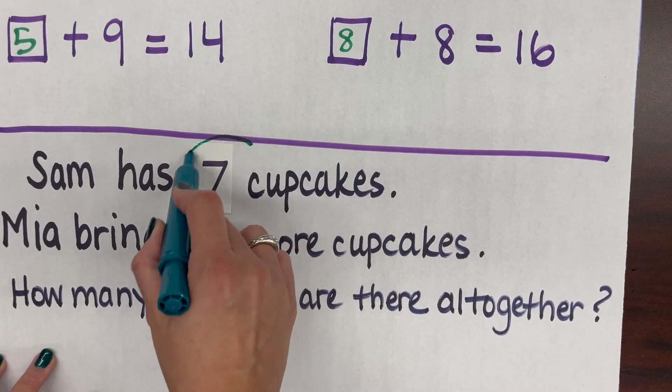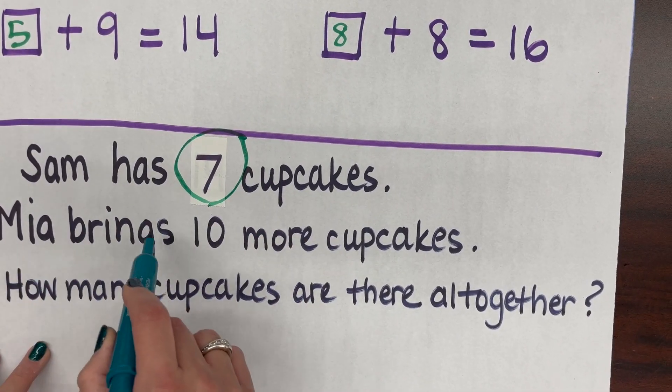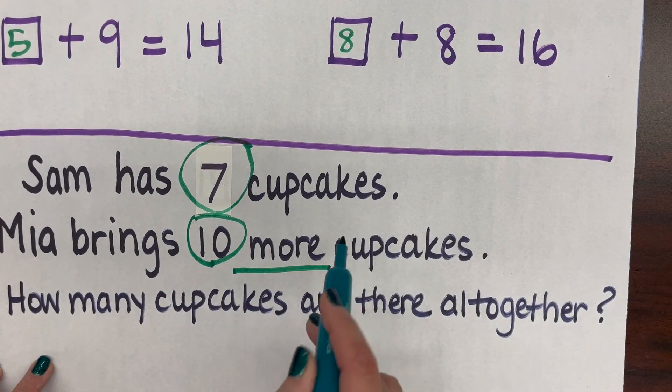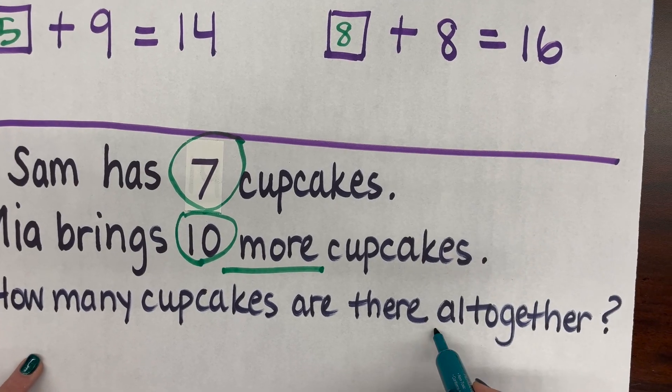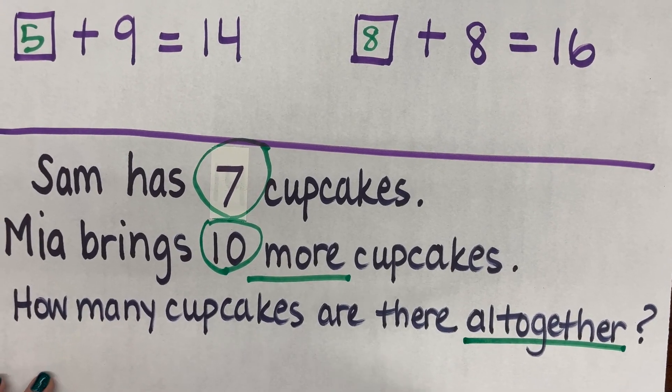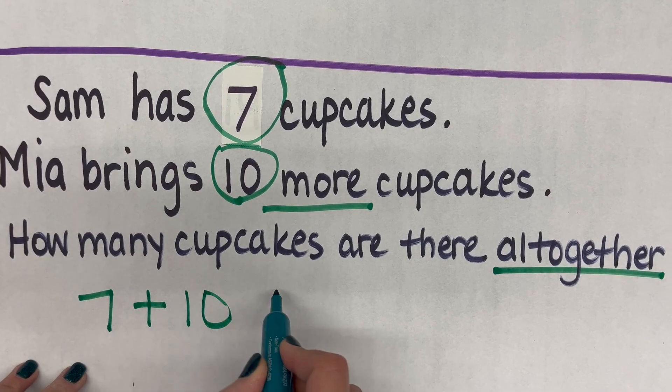We teach the children to look for the numbers in the problem and to look for the keywords. So Sam has 7 cupcakes. Mia brings 10 more, so 10 is the other number and more is the keyword. How many cupcakes are there all together? All together tells me that I have to add. So we have 7 plus 10 more.